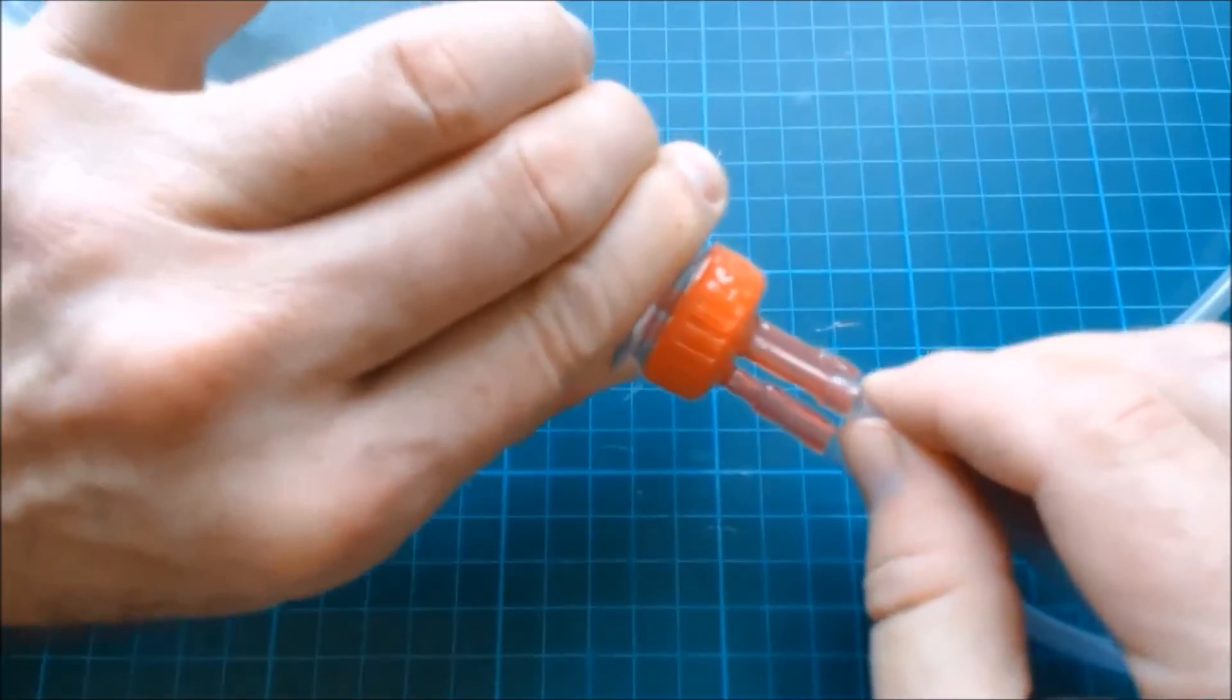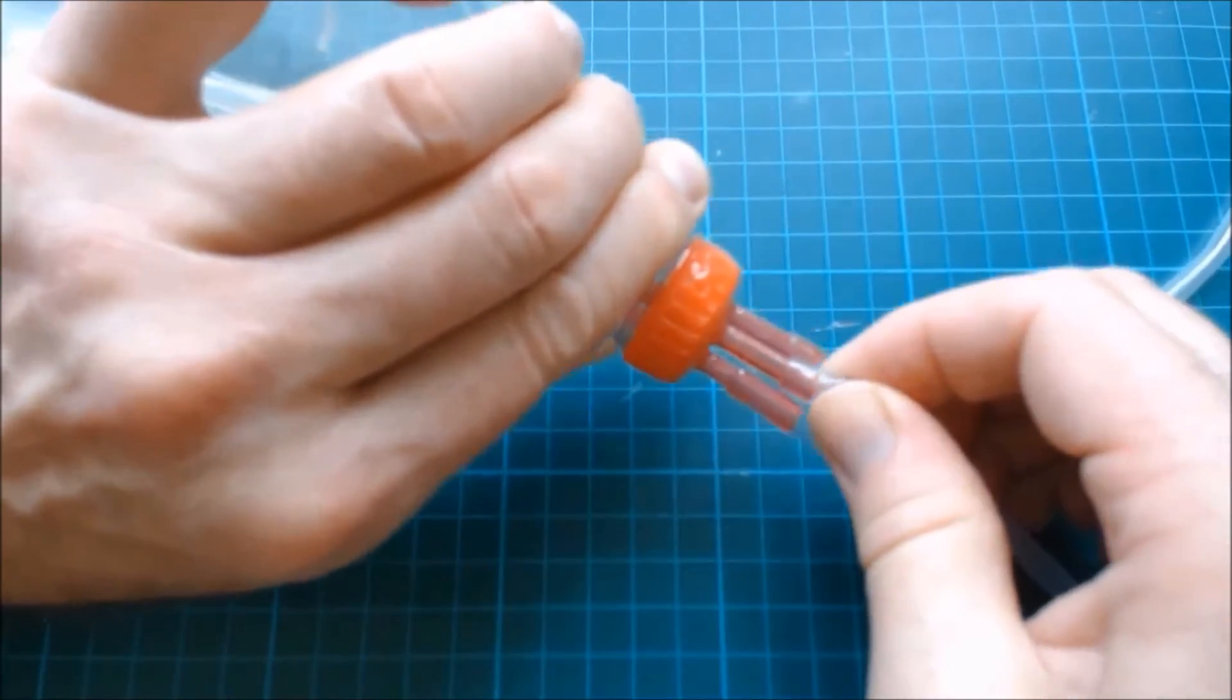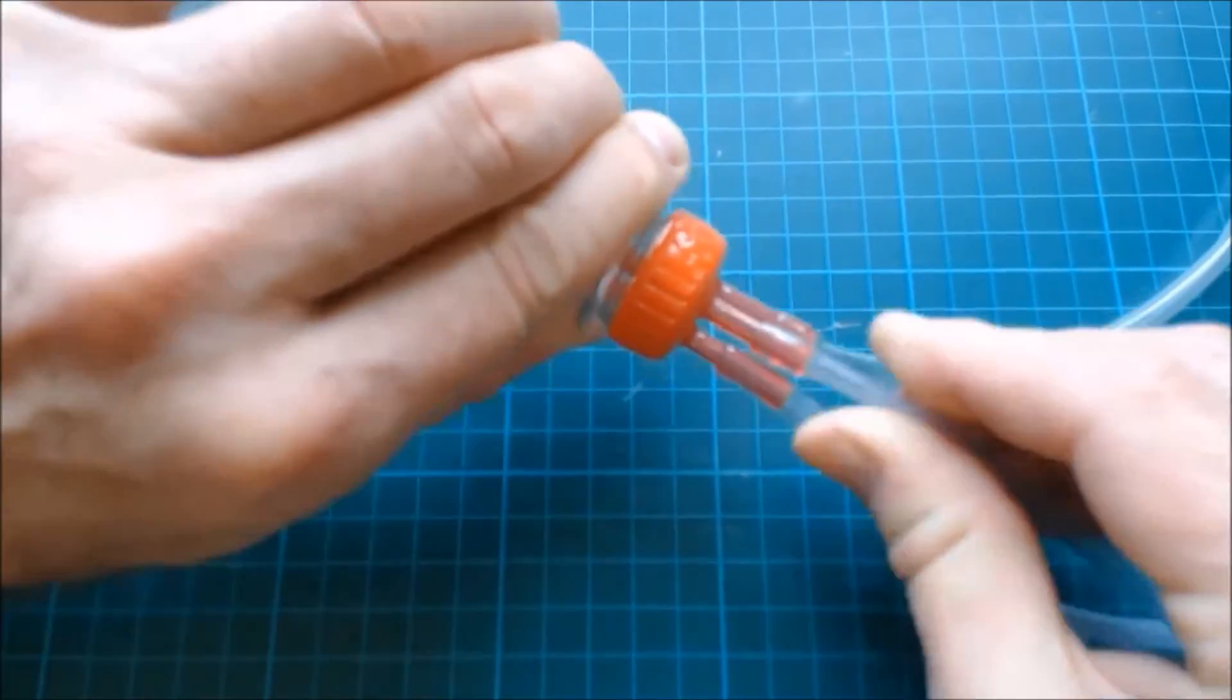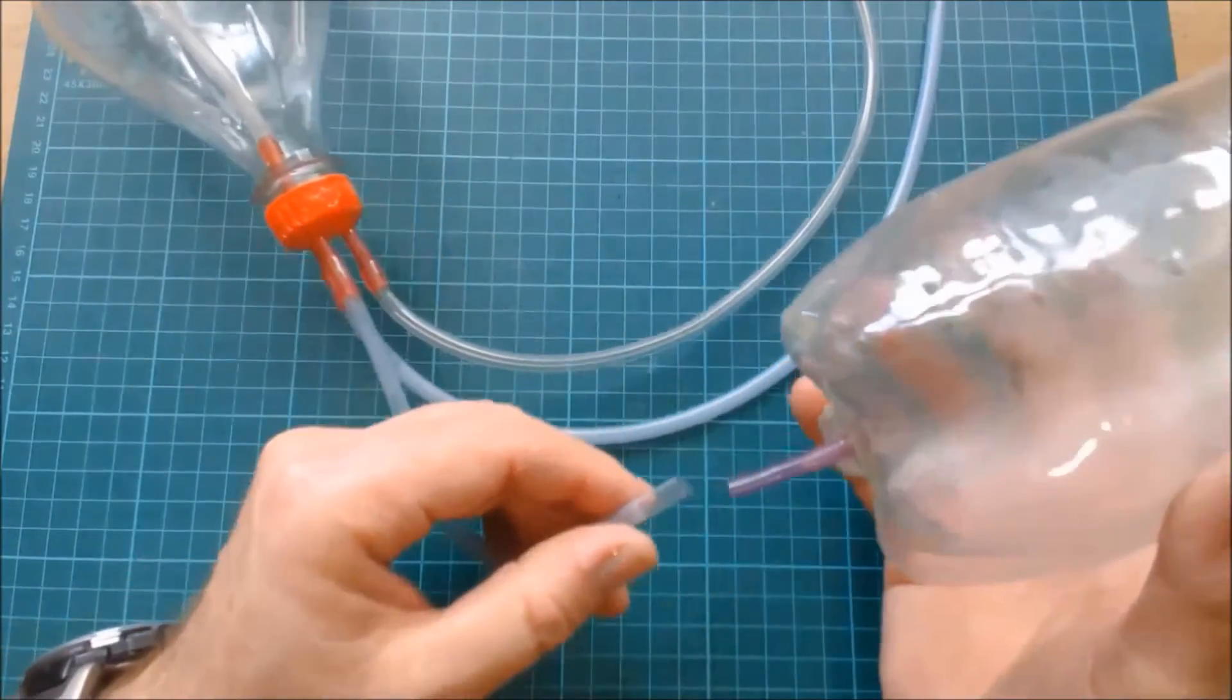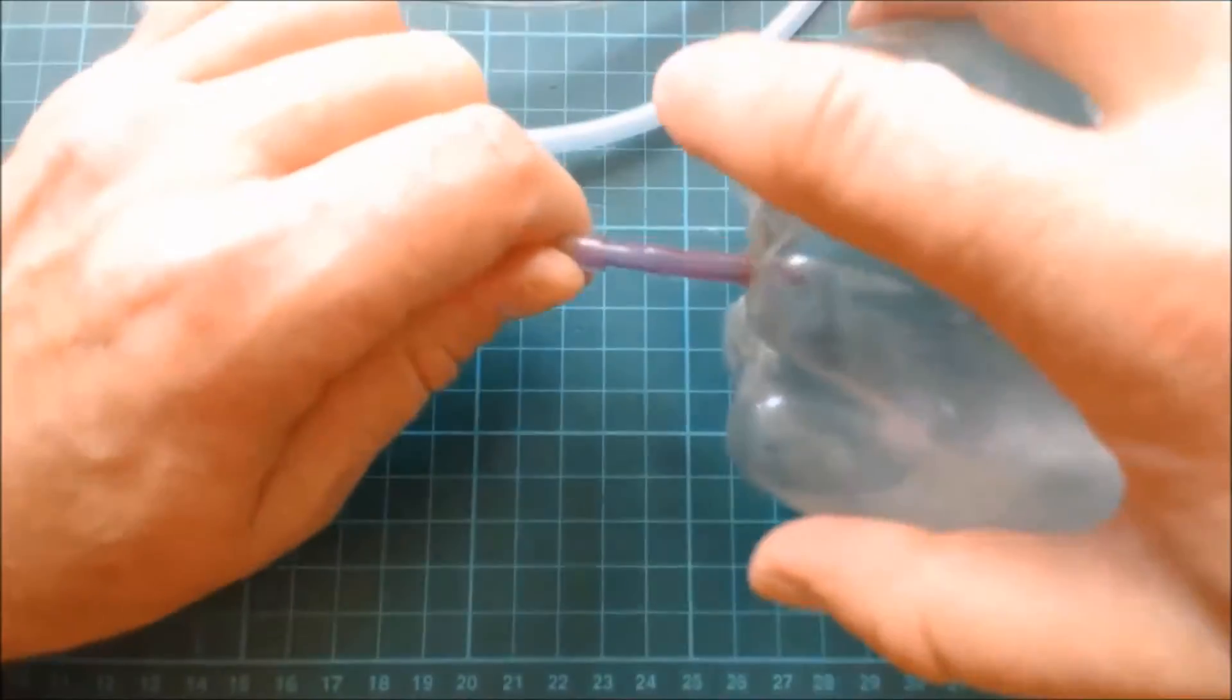Cut a twenty centimeter or eight inch length of tube and connect it to the first long straw. This is the straw with the pipe connected to the other side. Now connect the other end of the tube to the base of the second soda bottle.